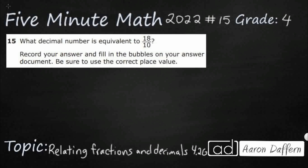You might be wondering, where's the rest of the problem? Well, apparently this is all that we have. The actual problem is simply this question: What decimal number is equivalent to 18 tenths? And then they give us some instructions for filling in the bubbles on our answer document. All we need to do is relate that fraction to a decimal number.